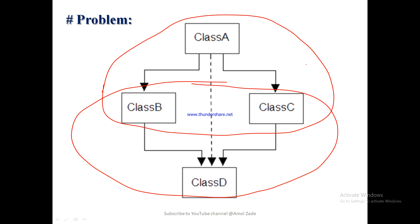The properties of class A go to class B, and from B they go to class D — so class D can access the properties of A from class B. At the same side, class A gives properties to class C, and from class C we also acquire properties into class D. That means the data of class A is received by class D, but in two copies — one copy from class B and a second copy from class C.